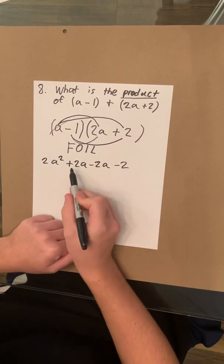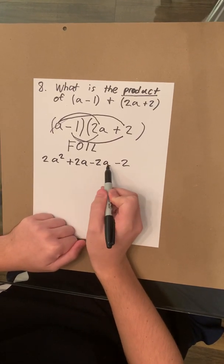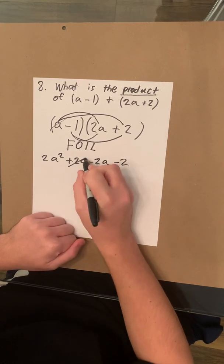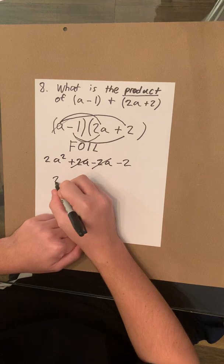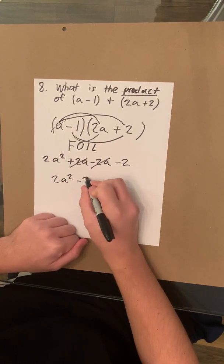When looking at this, you'll notice that you have positive 2a and negative 2a. Those two can cancel out. That's just equal to 0. So you're left with 2a squared minus 2.